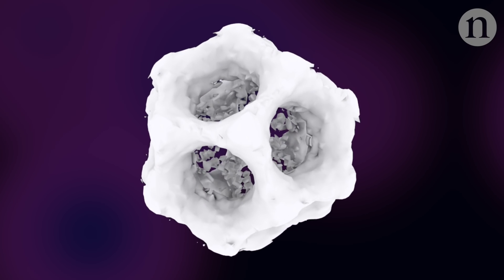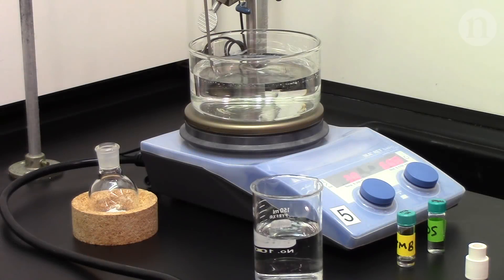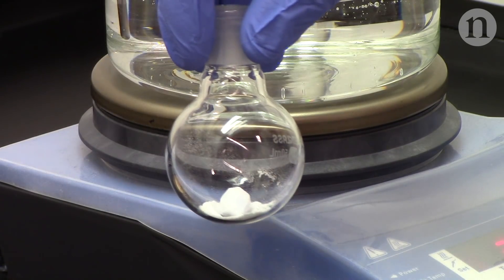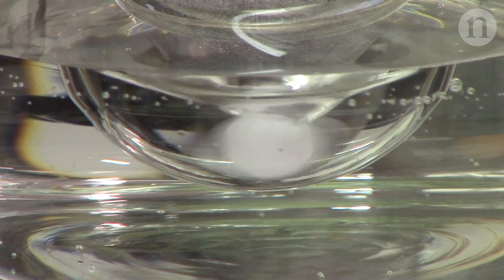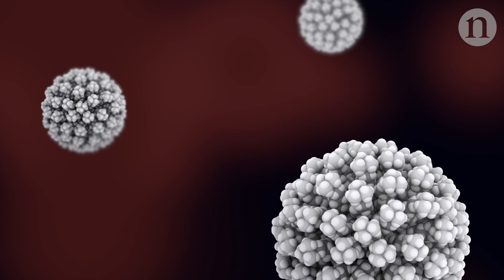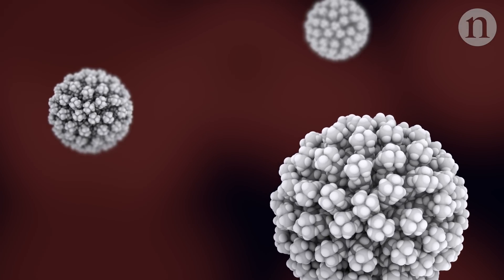To make it, researchers use a relatively simple technique. First, they need a template. For that, they use soap molecules. When in solution, the soap molecules form tiny balls called micelles. The size of the micelles is precisely controlled by the researchers.